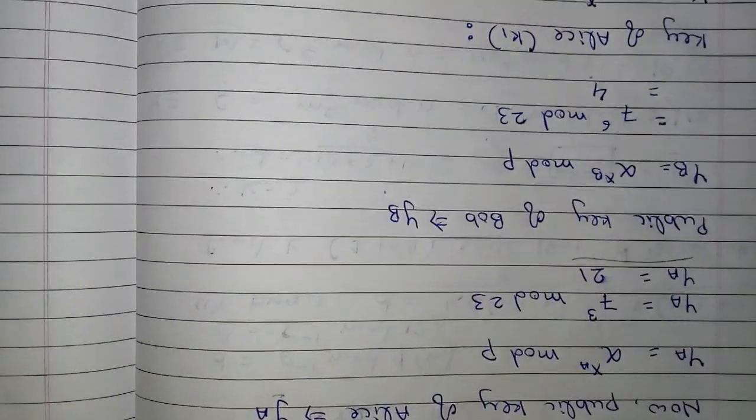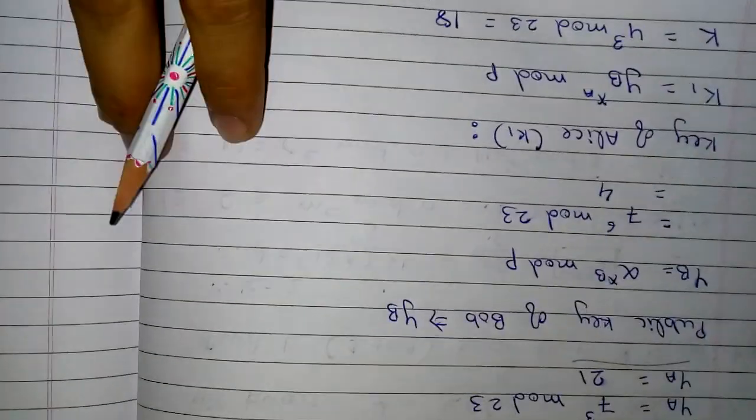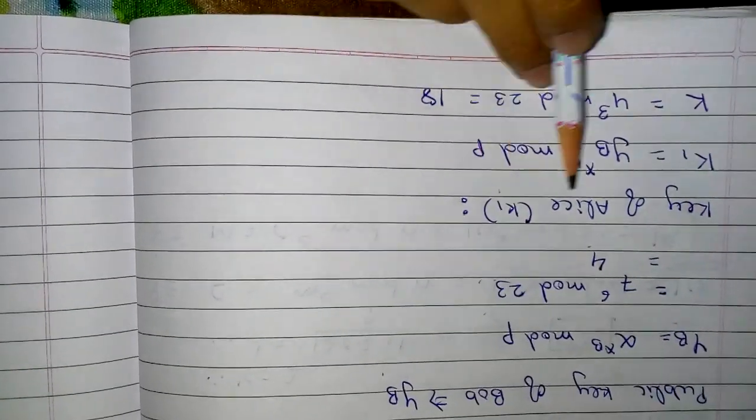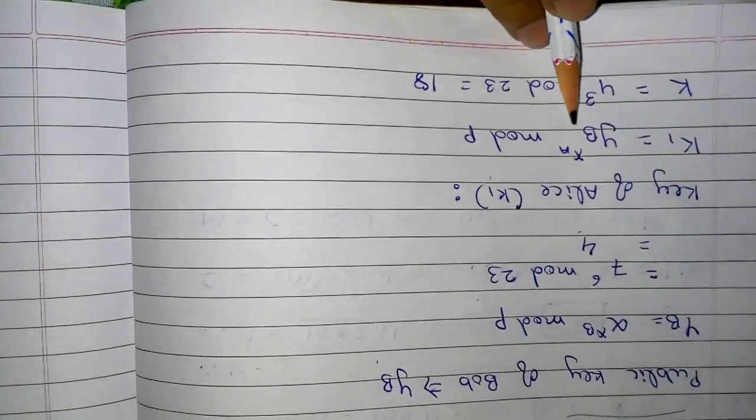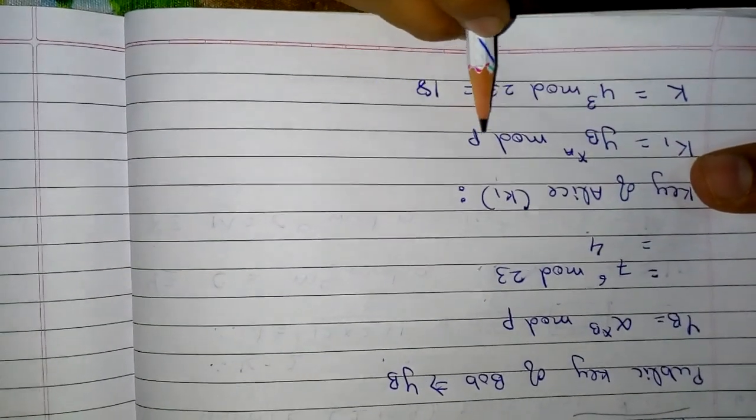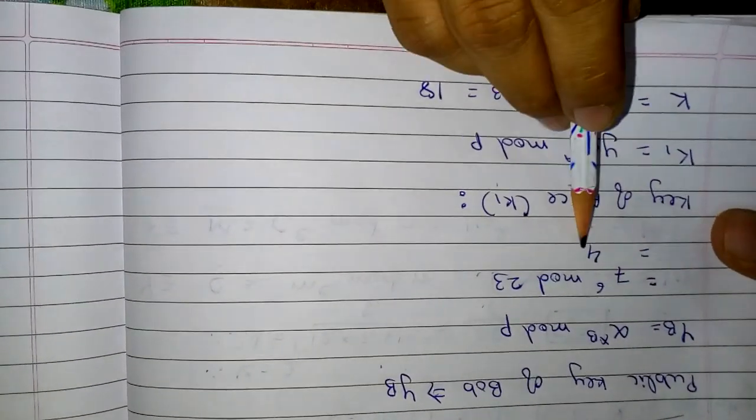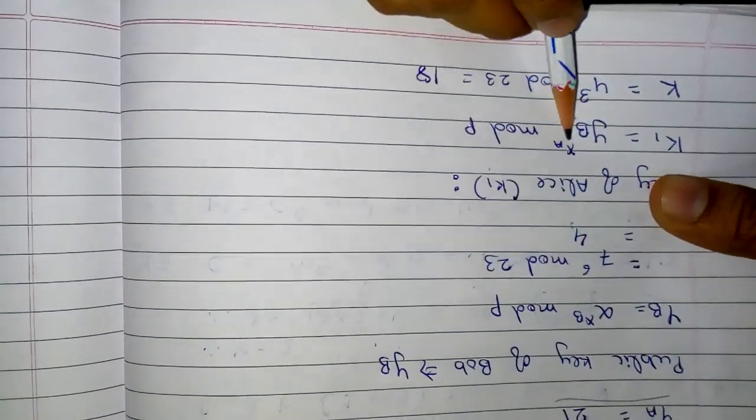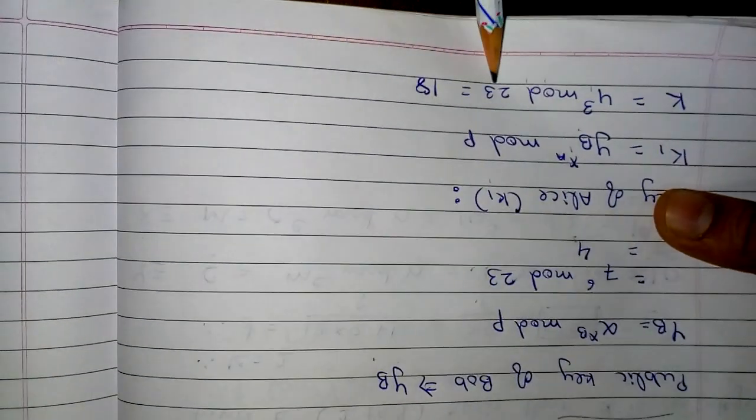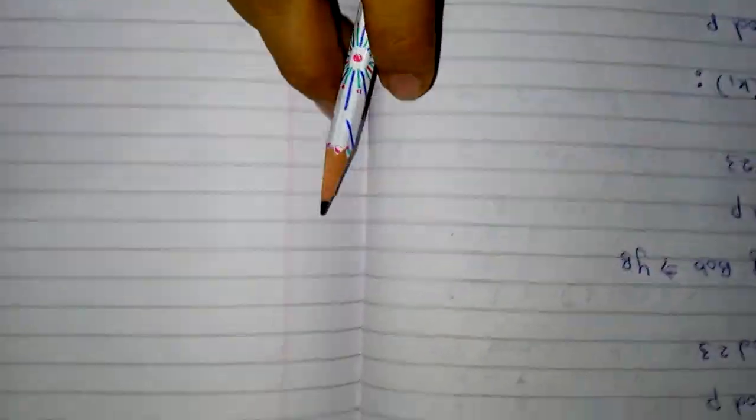Now let us find the key of Alice, let's call it k1. So k1 is yb raised to xa mod p. What is yb? yb is 4. xa is 3. So 4 raised to 3 mod 23 gives the answer 18.